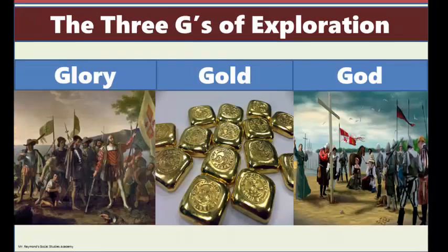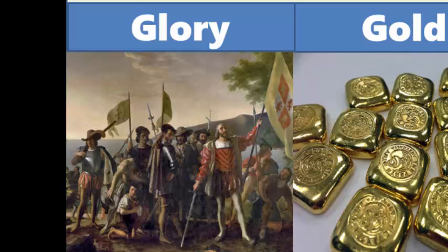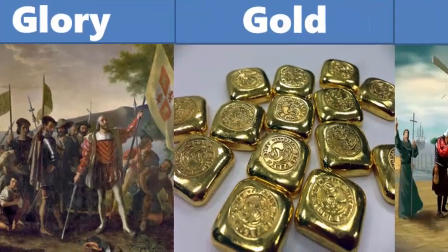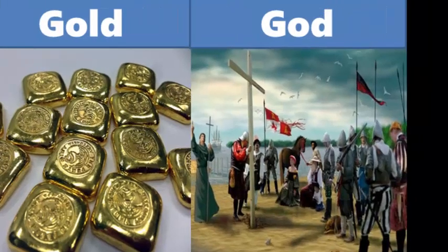We have a phrase to describe the reasons that early European explorers ventured out into the unknown, which is the three G's of exploration: Glory, Gold, and God. Glory describes the fame and honor these explorers sought — rightly so, as we still tell their stories. Gold speaks for itself — they wanted to get rich. And God speaks to not just the explorers, but to their financial backers' desires to spread Christianity throughout the world.